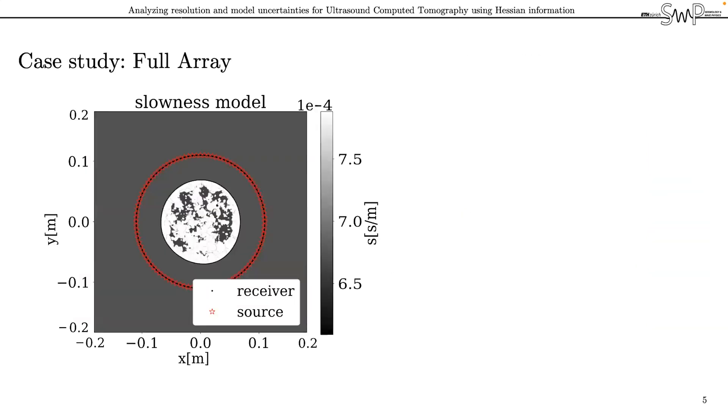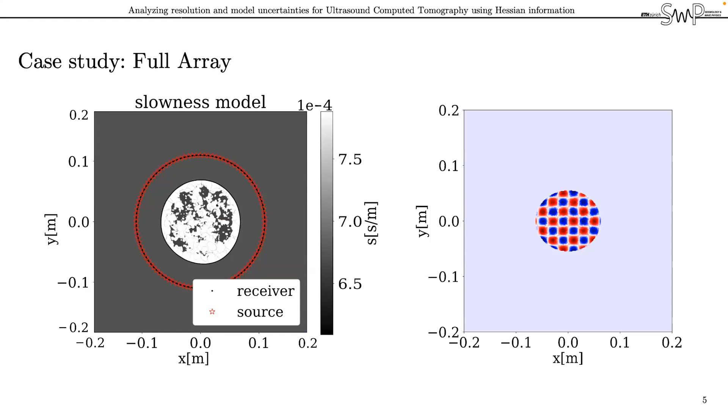As a final step, let's actually look at a realistic setup with many sources and receivers all around the model. In order to obtain a proxy for the model-wide resolution quality, a very common procedure is to perturb the model not only at one location but in the entire domain by a checkerboard pattern with negative and positive perturbations, which you can see in a qualitative fashion here. If the reconstruction is able to reproduce the pattern of the checkerboard, perturbations on the order of the width of the individual squares are well resolved.